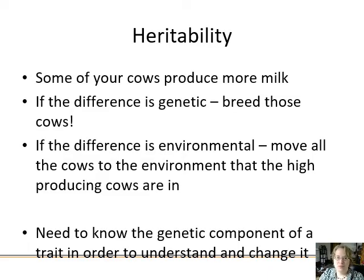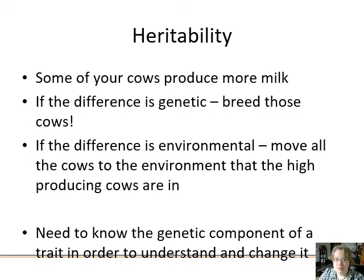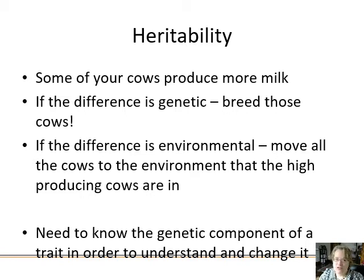The idea of heritability is that some cows produce more milk than others. If the difference is genetic, you breed those cows and get cows that make more milk. However, the difference could also be environmental — maybe those cows are grazing in a better pasture. So knowing whether a trait is highly genetically based or environmentally based is really useful in order to get more production out of your animals or crops.